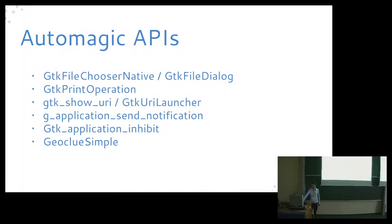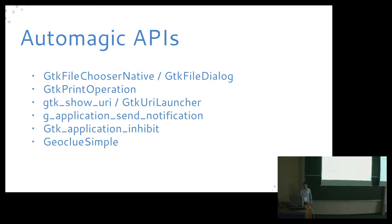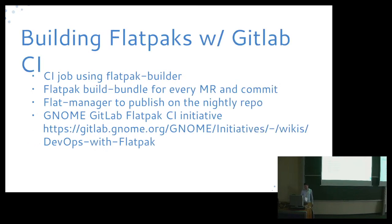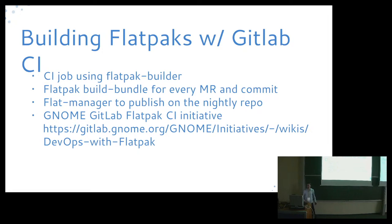There are also various automatic portal APIs. If you're using GTK's file chooser native or GTK file dialog, you don't have to explicitly interact with the portal — it does that behind the scenes. The same applies to print operations, sending notifications, inhibiting the application, and accessing the user location. You can build your Flatpak in CI and get a bundle that allows users to test a specific patch, or translators to test how the application looks.